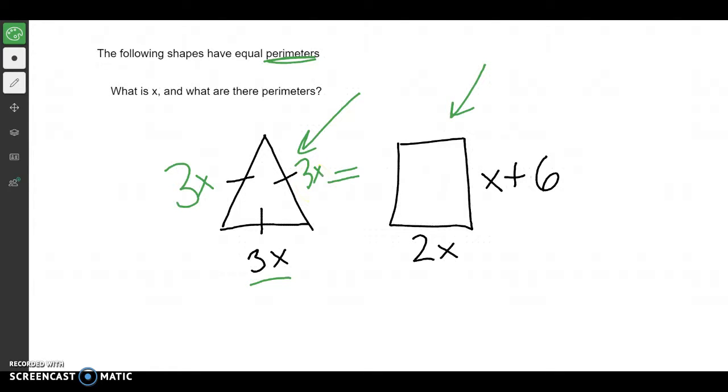So let's find the perimeter of the triangle. The perimeter of the triangle would be 3x plus 3x plus 3x. Then I'm going to go over here to the rectangle, and I know it has the same perimeter. So since it has the same perimeter, I know it's equal.